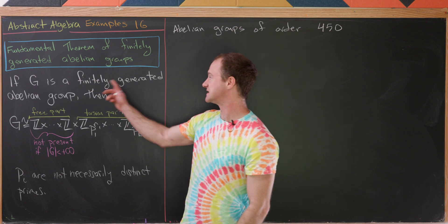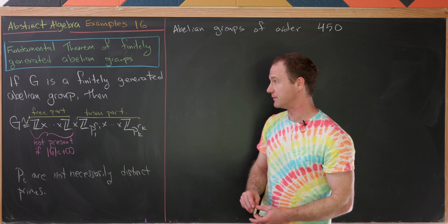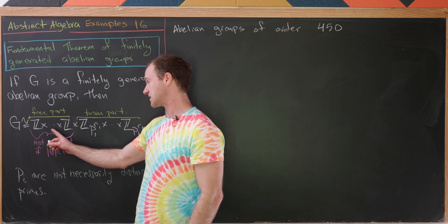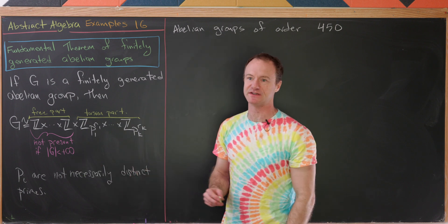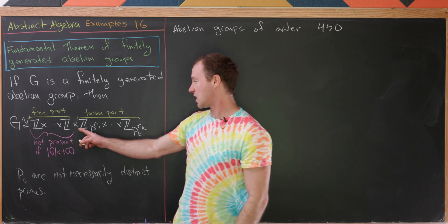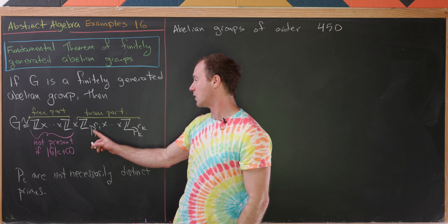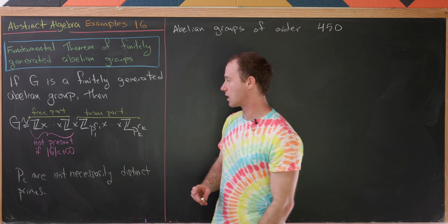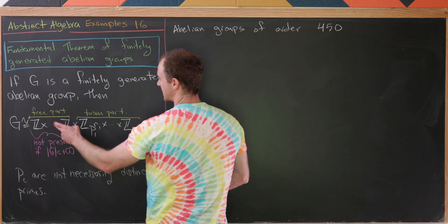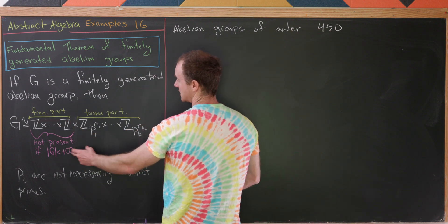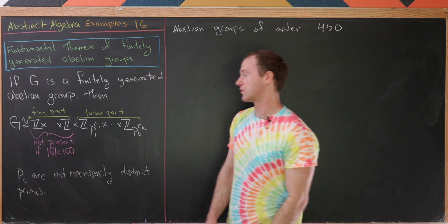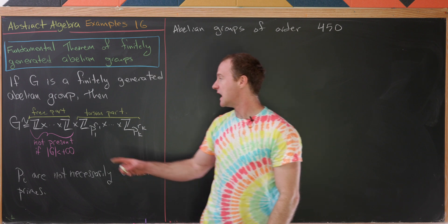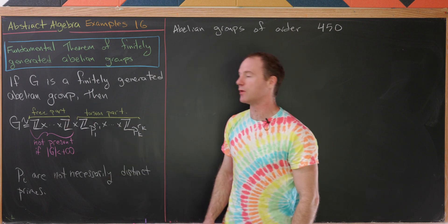This theorem says that if G is a finitely generated abelian group, then G is isomorphic to Z cross Z cross Z, a bunch of copies of Z, cross Z sub P1^R1, all the way up to Z_Pk^Rk. If G is not infinite, then this part is not present. The part that is just Z cross Z cross Z, so on and so forth, and this part is called the free part.